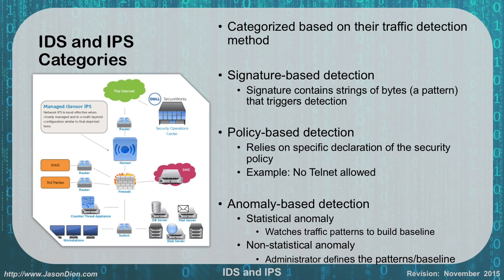Anomaly-based detection uses statistics to watch traffic patterns and build a baseline. If something doesn't match the baseline, it will flag on that. For instance, if people normally log onto the network between 9 and 5 and someone tries to log on at 2:30 in the morning, we're going to flag that. Non-statistical anomaly detection is when the administrator actually defines the patterns or baseline. You have to be careful with anomaly-based because it may flag legitimate traffic — like a sysadmin working late — and stop them. Signature-based is usually used about 90% of the time because it is very exact, but you have to know what you're looking for.